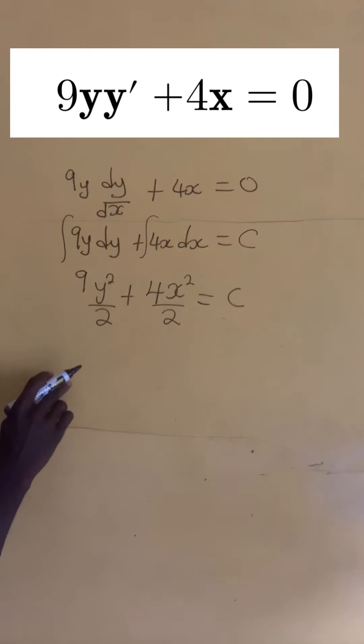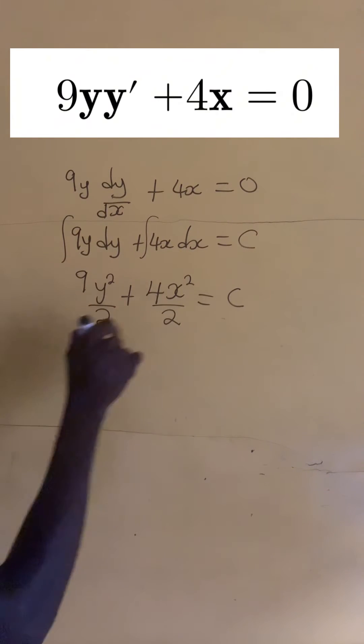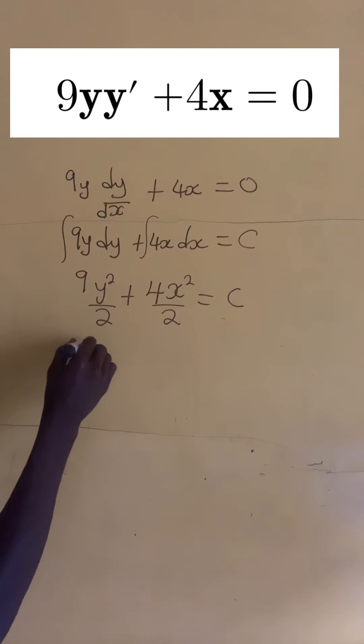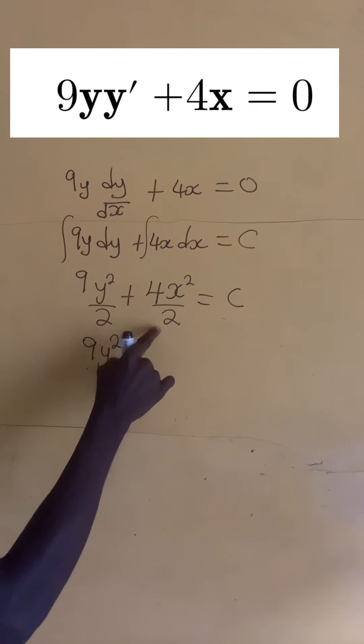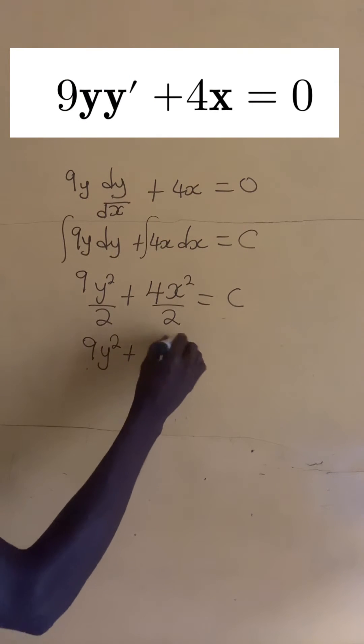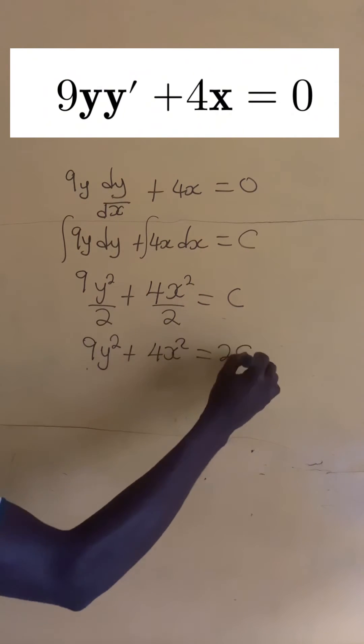Now let us clear the LCM. If we multiply by 2, we have 9y squared plus, here 2 can go into 4, but that 2 that we are using to multiply can also cancel the 2. So we have 4x squared equals 2c.